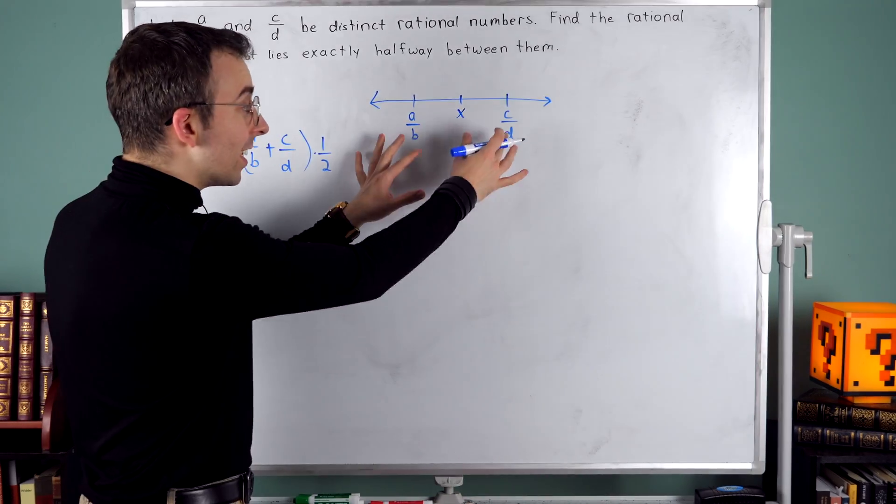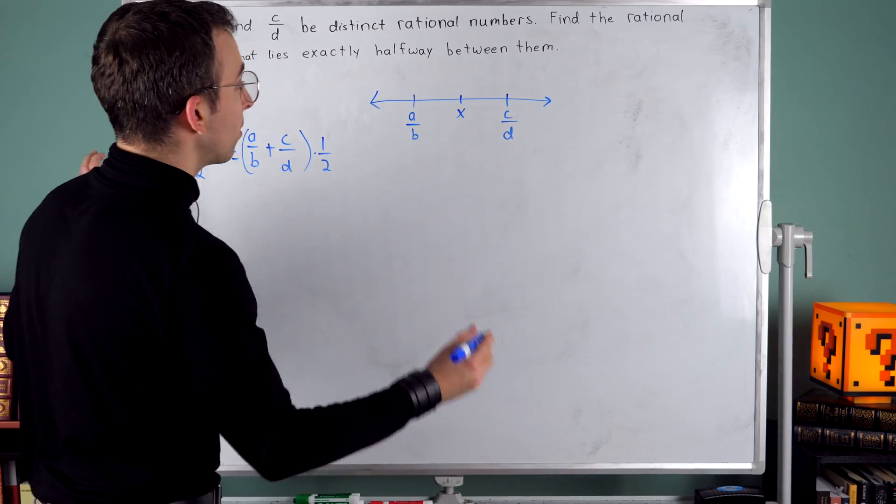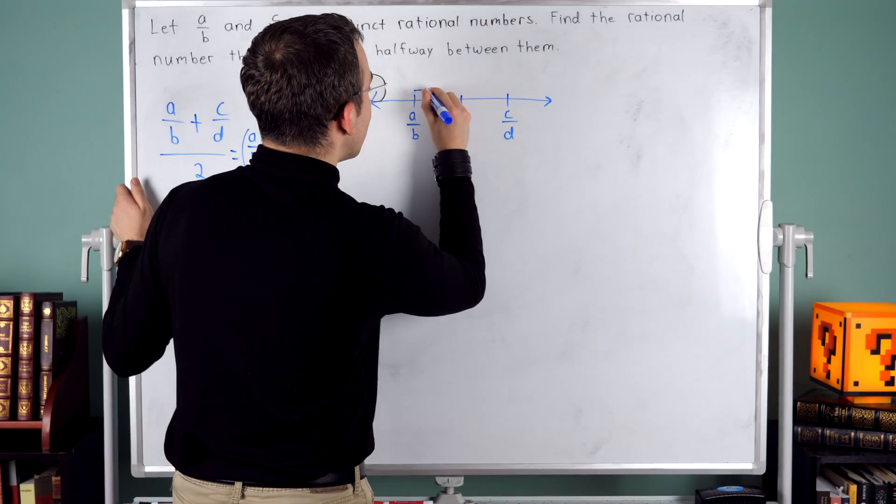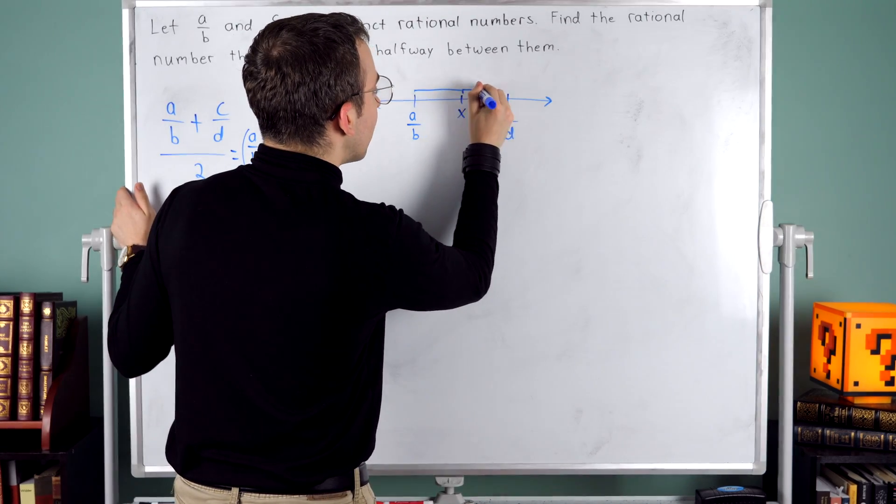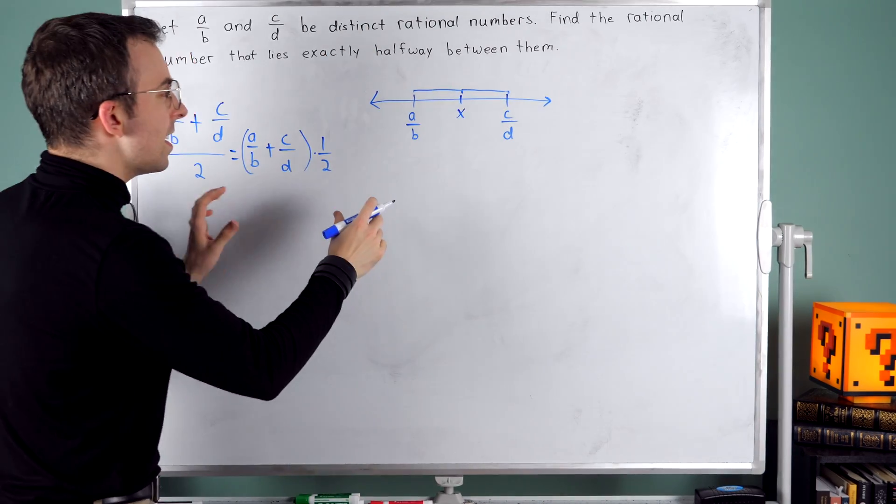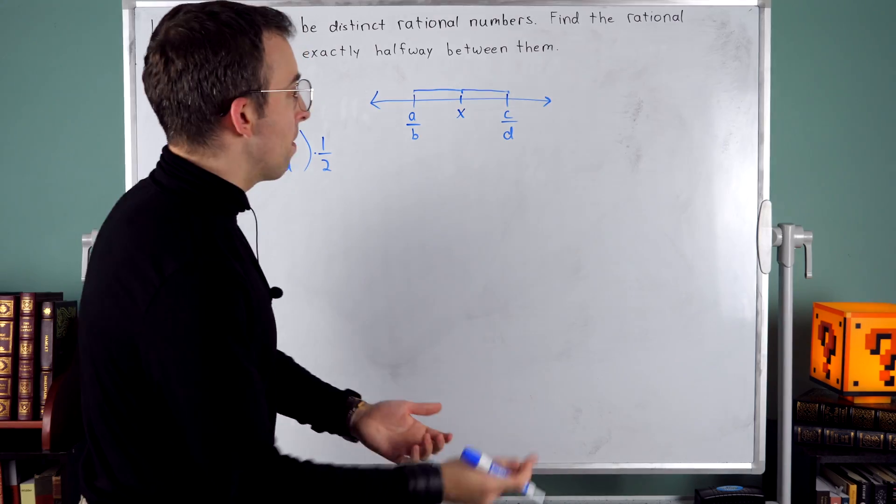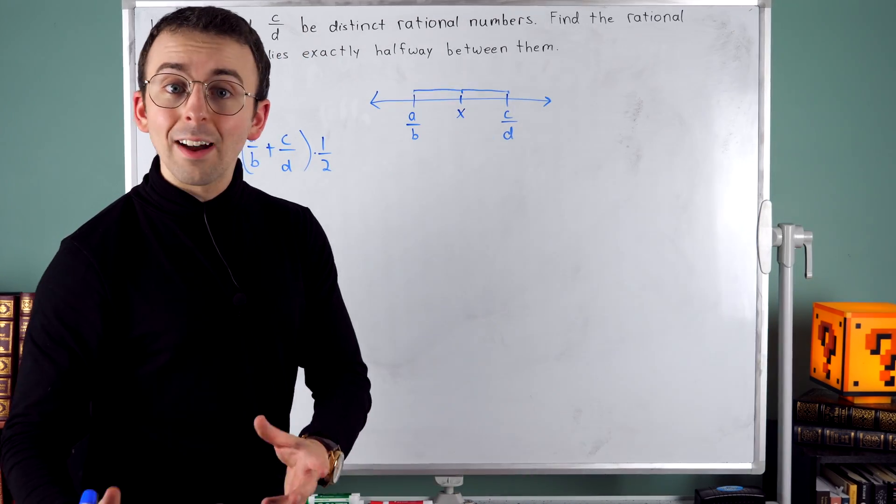Since x is exactly halfway between these two numbers, well, I know that this distance from A over B to x and this distance from x to C over D, those have to be the same because x is exactly halfway between them.